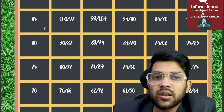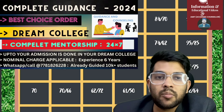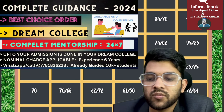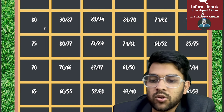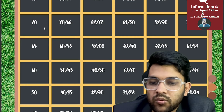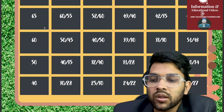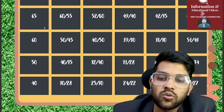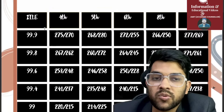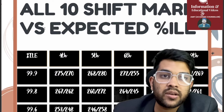All this information is available on this channel. For complete mentorship and guidance, you can contact me — a nominal charge applies, but once you register, I'll guide you until your admission is done. Details are in the description box. For 65 percentile: 60 / 52 / 49 / 42 / 61. For 60 percentile: 50 / 40 / 39 / 33 / 51. For 50 percentile: 40 / 32 / 31 / 36 / 40. For 40 percentile: 30 / 25 / 24 / 20 / 30 marks required. After slash you can check the second shift data. Similar information on JEE Advanced eligibility minimum marks will follow — please subscribe so you get everything at the right time. Thank you.